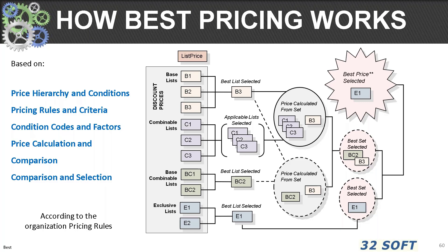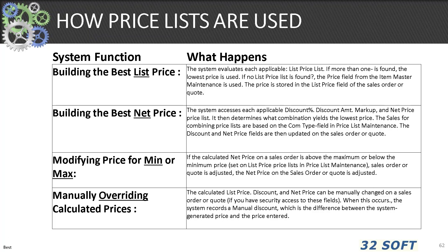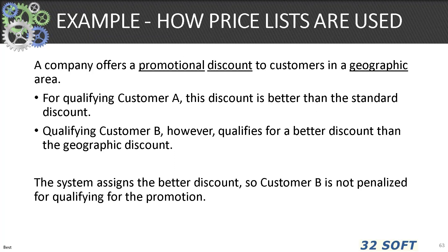Best pricing considers the best base price plus all combinable discounts, or the best base price plus the best combinable price list, or the best exclusive price list. Price lists assist in building better net prices and modifying minimum, maximum, and manually overriding calculated pricing. Here is an example of how the system will determine the best discount so that customer B is not penalized for qualifying for the promotion. This kind of rule requirement can be complex and needs to be tested and validated.